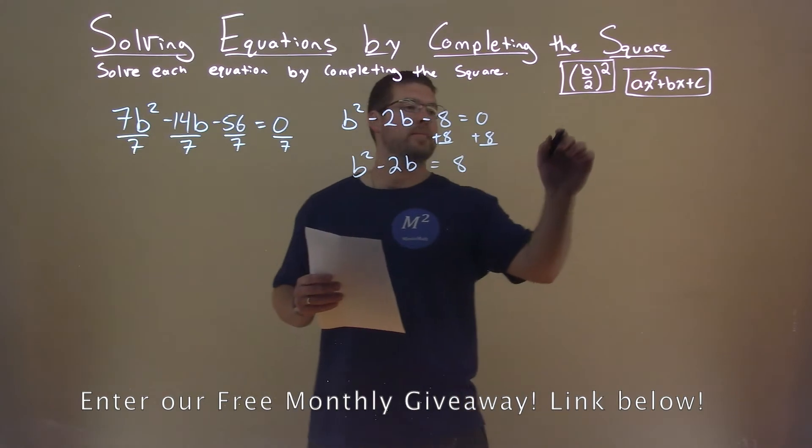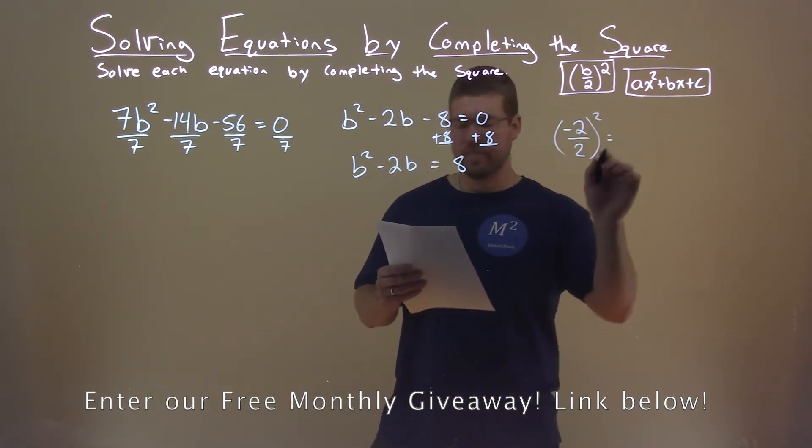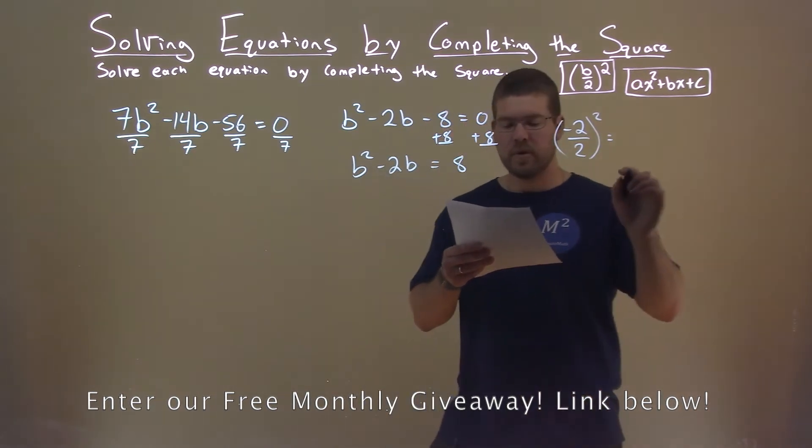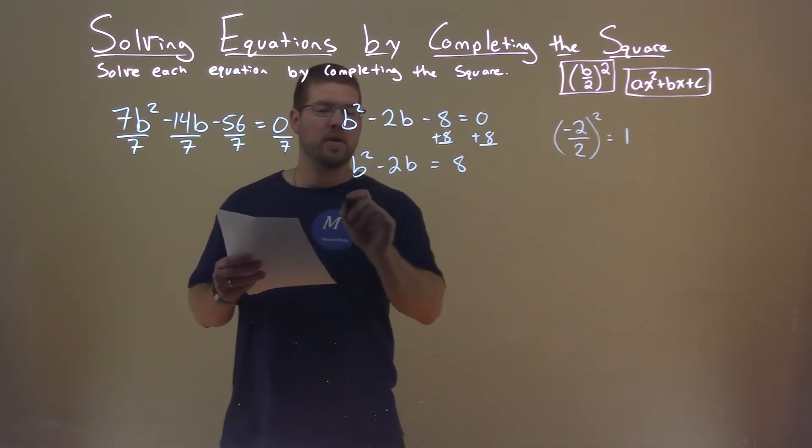Now let's look at our b value here, negative 2. Divide that by 2, and we square it. What does that come out to be? Well, a positive 1.